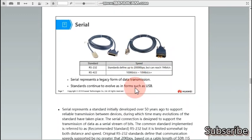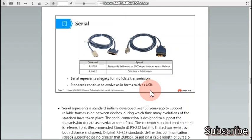Next medium is called the serial medium. There are two standards of this serial medium: RS232 and RS422, defined on the basis of speed. RS232 is a standard defined up to 20,000 bps but can reach 1 megabit per second. RS422 can cover the speed of 1000 kbps to 10 Mbps. Serial represents a legacy form of data transmission and standards continue to evolve as in the form of USB. USB is also a serial medium.